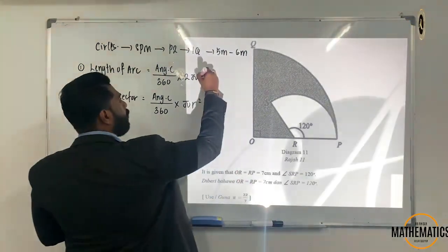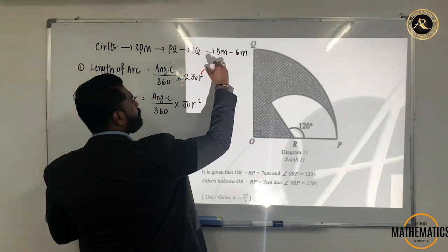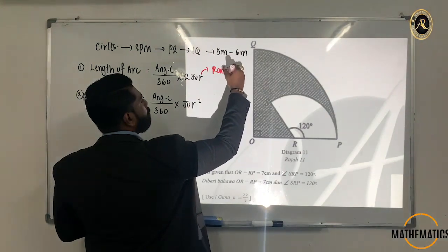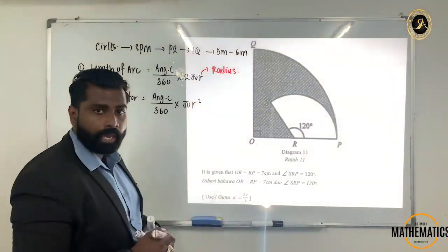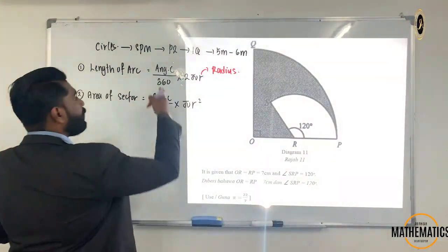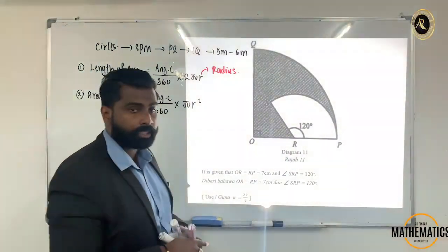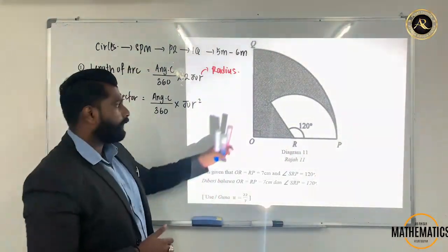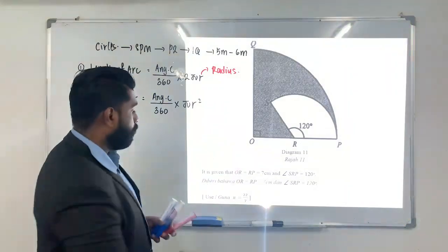R stands for radius. The angle at center is what we use in both formulas. Now let's take a look at this question.